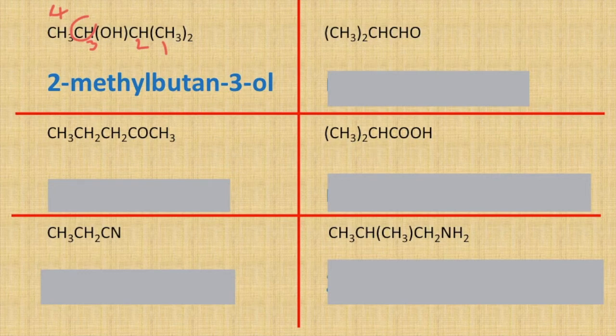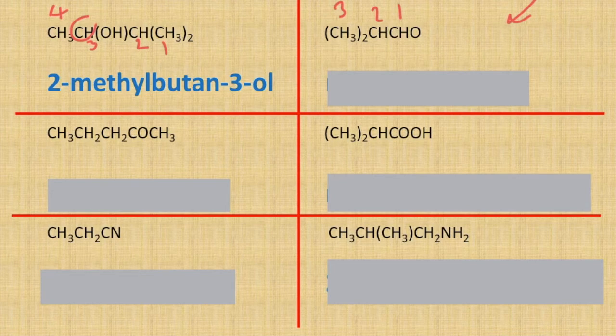The one next to it looks like it's going to be an aldehyde — a carbon chain length of three, with one, two, three carbons there. And coming off the second carbon you have got two methyl groups.